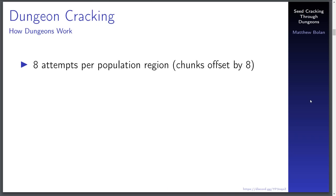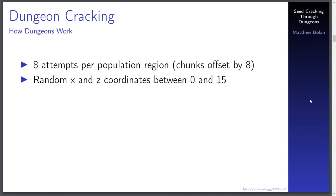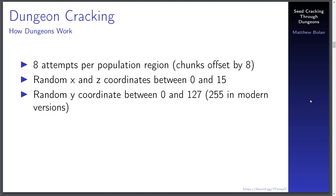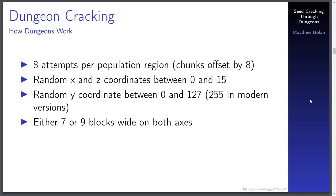For every population region — which is like a chunk, but with eight added to both the X and Z coordinates for technical reasons — the game tries to place eight dungeons. It chooses a random X and Z coordinate between zero and 15 within that population region, and also a random Y coordinate between zero and 127. There's a little more randomness in that the dungeon is made either seven or nine blocks wide on both axes, giving you seven-by-seven, seven-by-nine, nine-by-seven, or nine-by-nine dungeons.